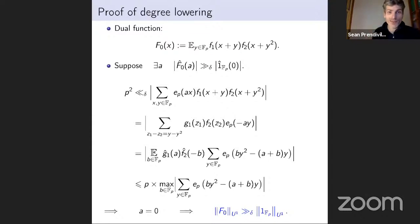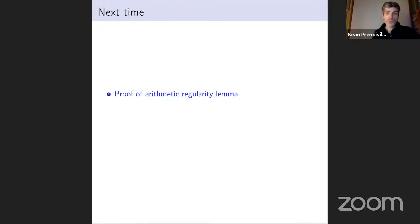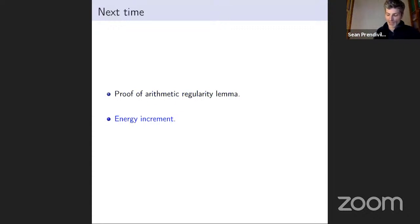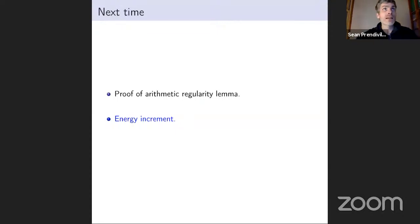That's all for today. Next time — our last lecture — we're going to prove the arithmetic regularity lemma using the technique of energy increment, which is related to the density increment argument we've already seen. While we won't see additional concrete results in combinatorial number theory, the arithmetic regularity lemma is a very robust technique that yields many results in the area.